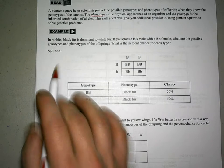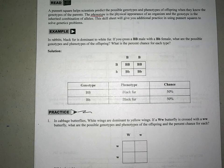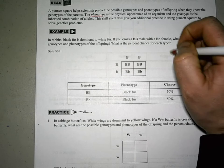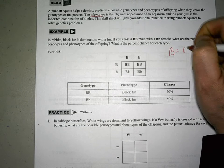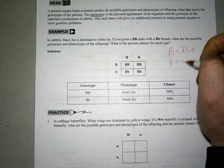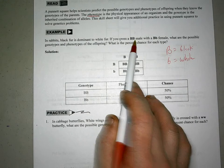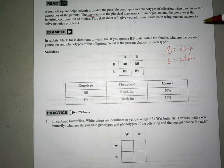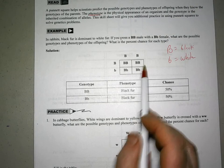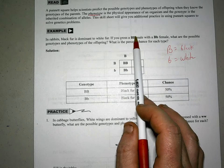Let's start off with a practice problem. When I do practice problems, I like to highlight different parts and write some things down so I know what I'm doing, just like with the osmosis practice problems. So in rabbits, Big B equals black fur, which is dominant to white fur, Little b equals white. If I cross a Big B, Big B male with a Big B, Little B female, what are the possible genotypes and phenotypes?